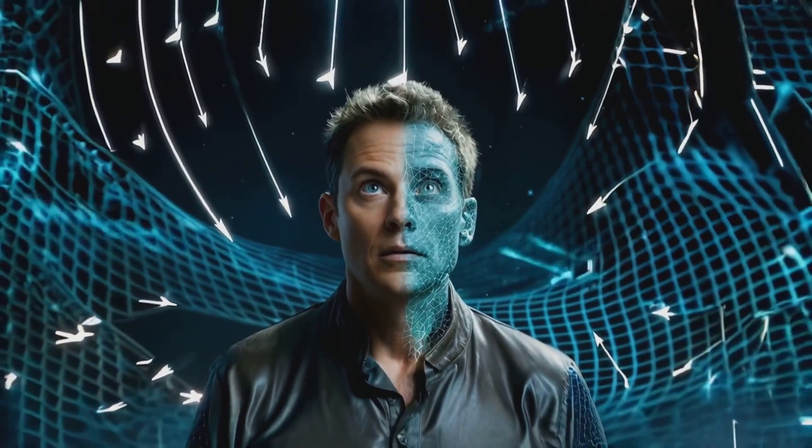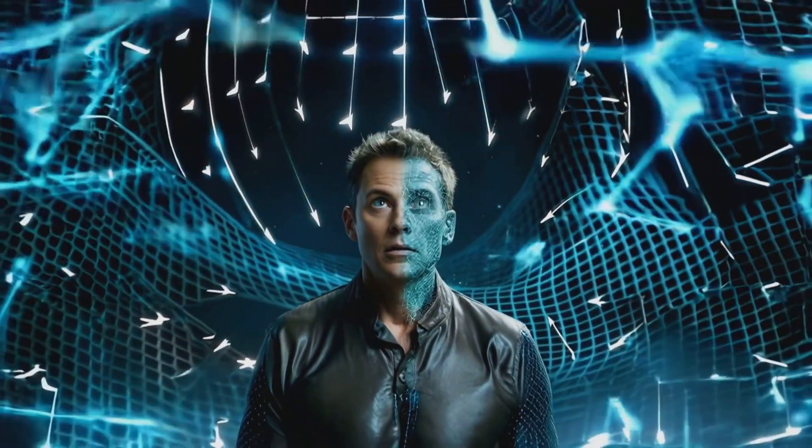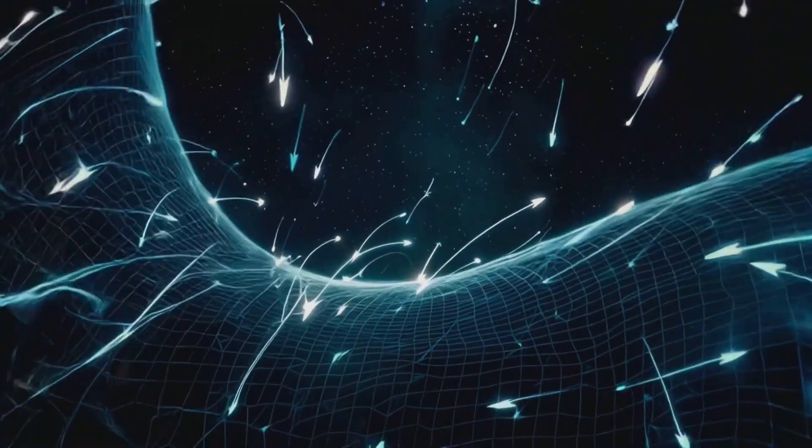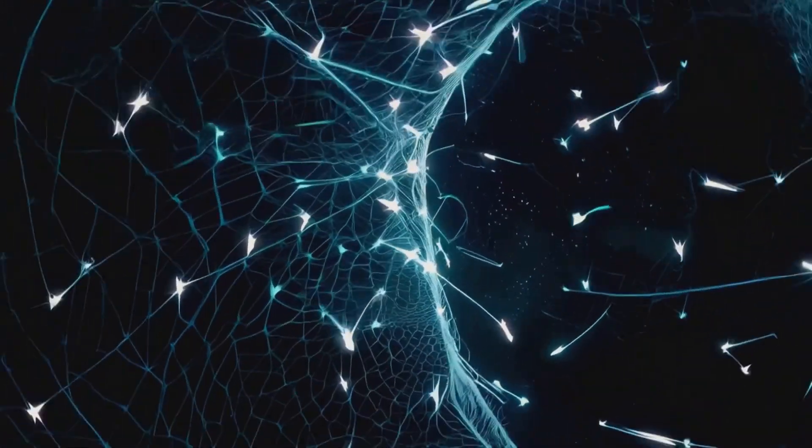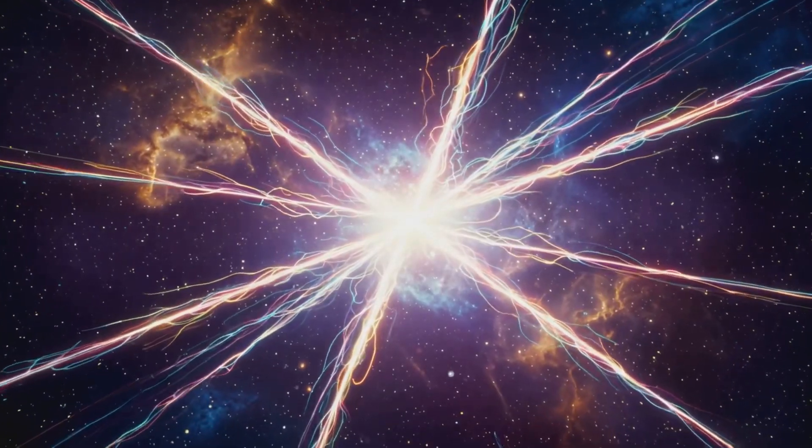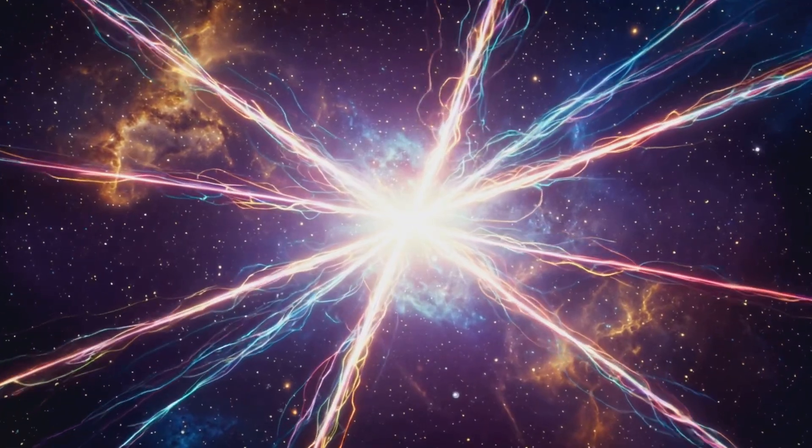Each of us is a world line, a unique interference pattern that arises from the sum over histories of our quantum state in the singularity. Where these interference patterns intersect, lives touch, destinies cross, and possibilities unfold.